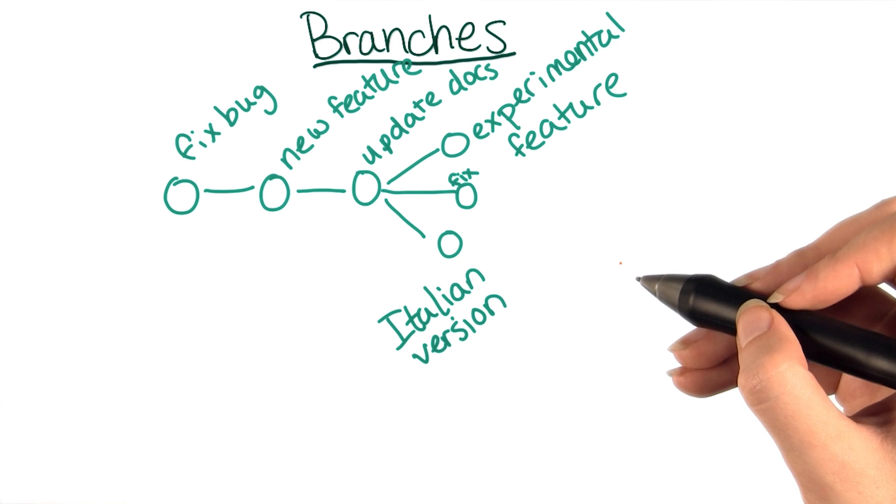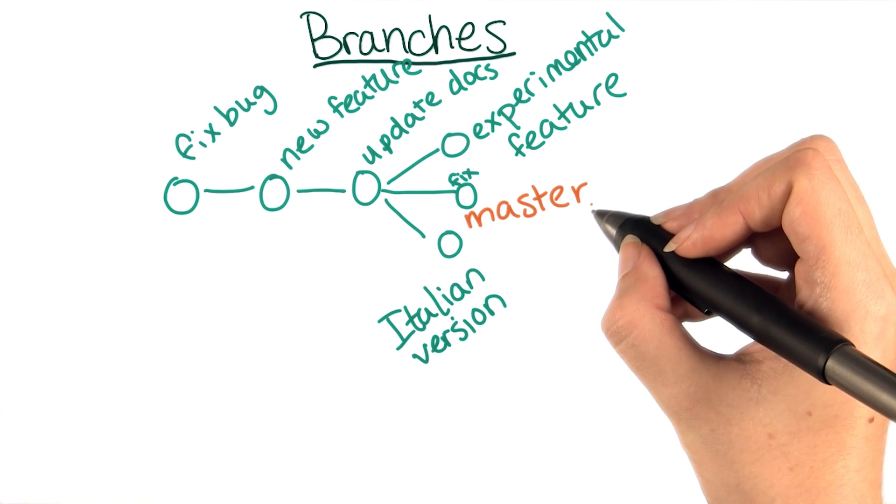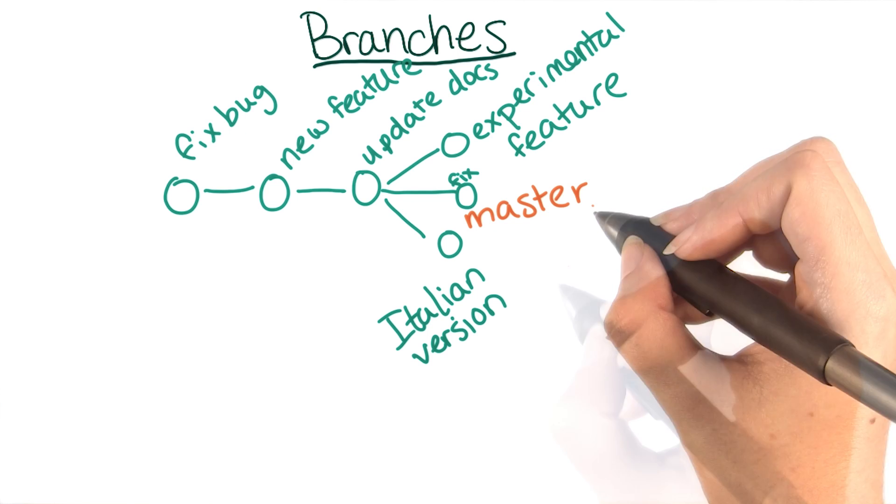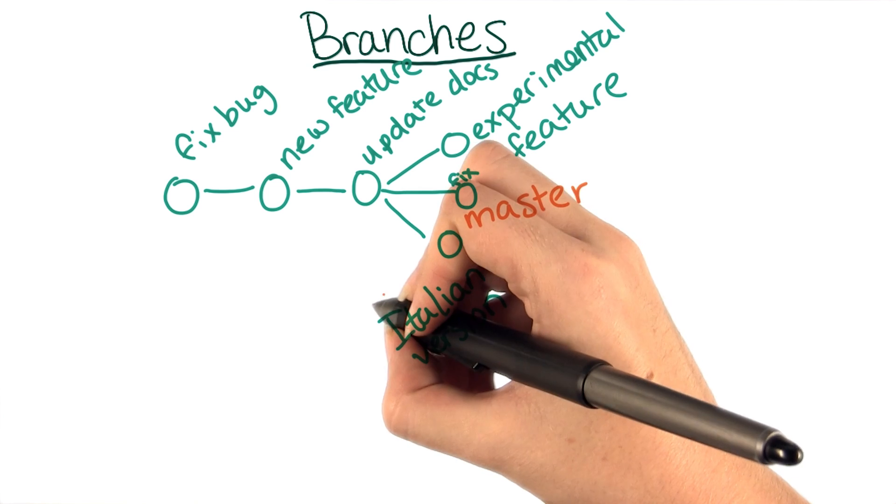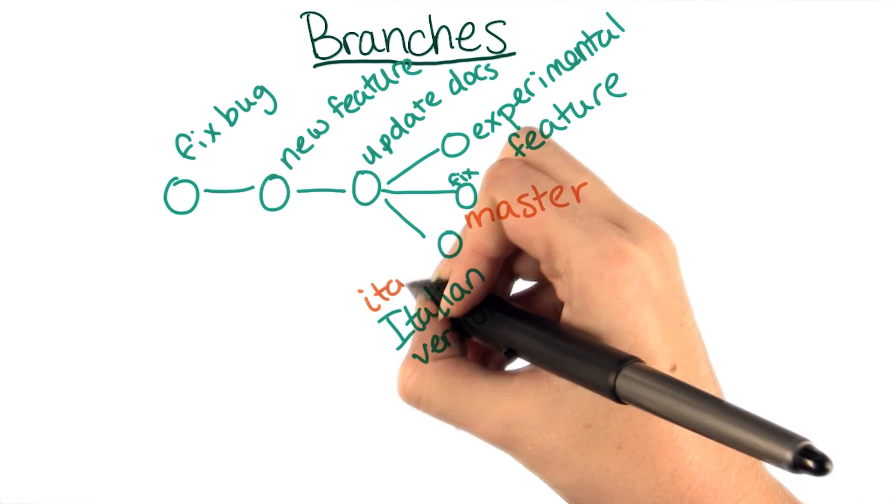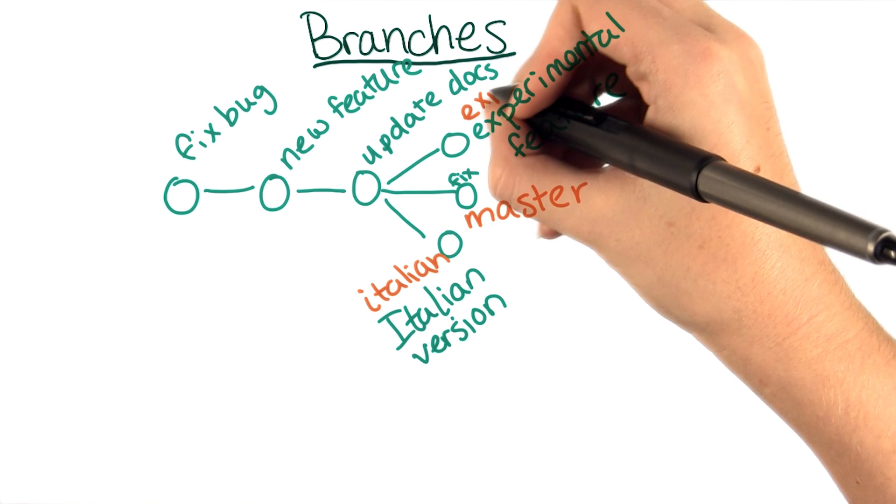In this case, we would have three different branches. First, we would have master. Master is the name given to the main branch in most git repositories, and every time you create a repository, git creates a master branch for you. This branch we would probably call something like Italian, and this one we might call experimental or maybe just exp for short.